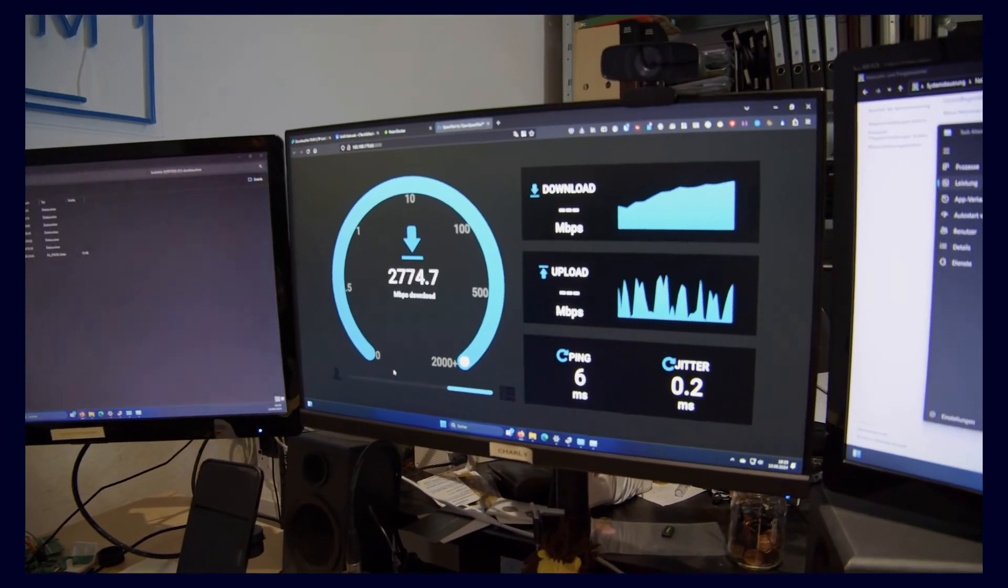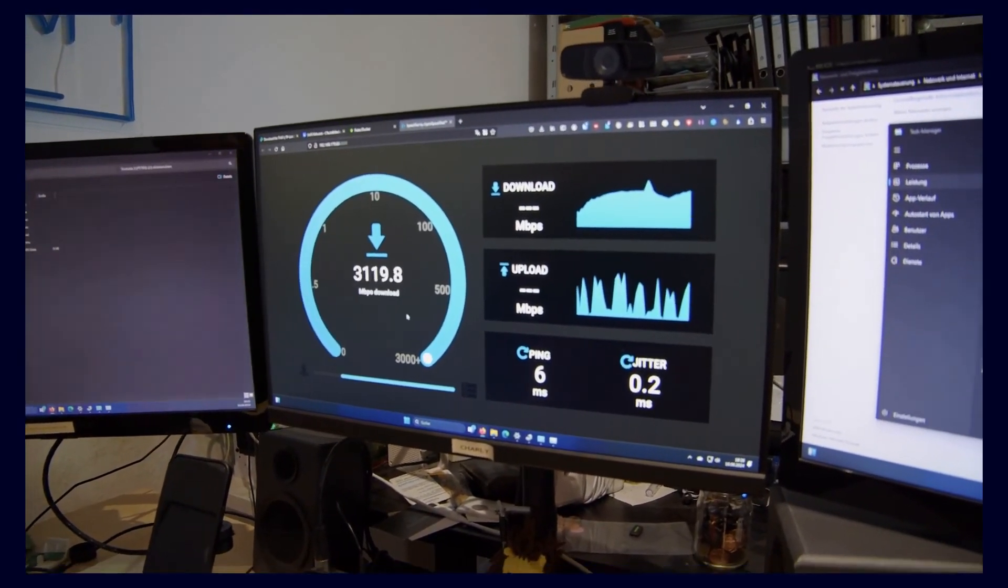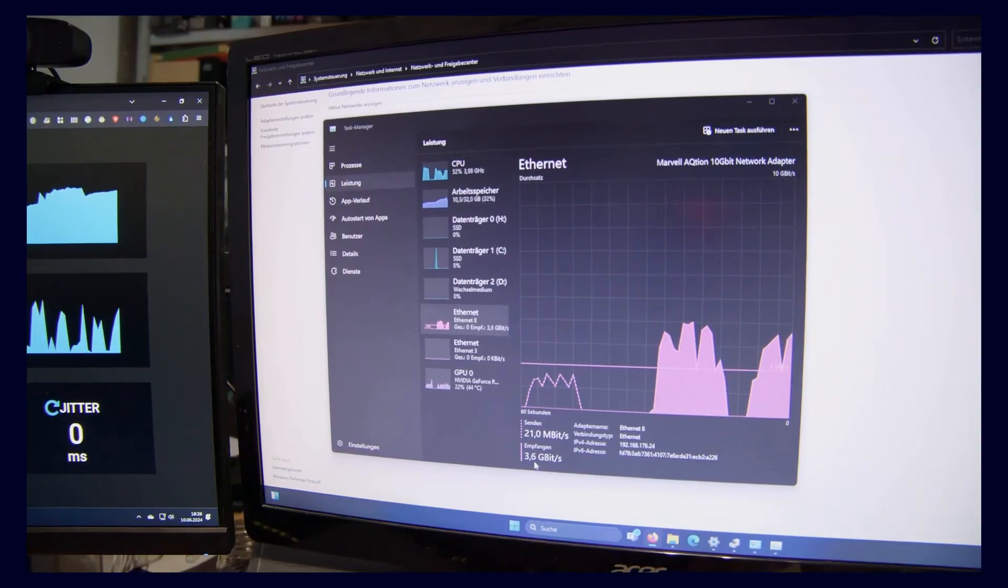Finally, we obviously need to test everything as well. For this, we will simply copy a file from my computer to the server as a standard procedure. As you can see, we are not fully utilizing the 10 gigabits, averaging about 2.5 to 3 gigabits. And here the question remains, why aren't we fully utilizing the 10 gigabits? This could be due to several reasons. On one hand, it depends on the server's hard drive speed. And on the other hand, it also depends on the server's CPU.